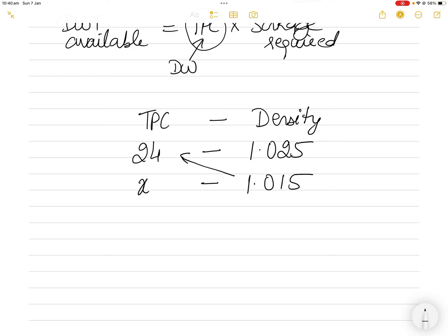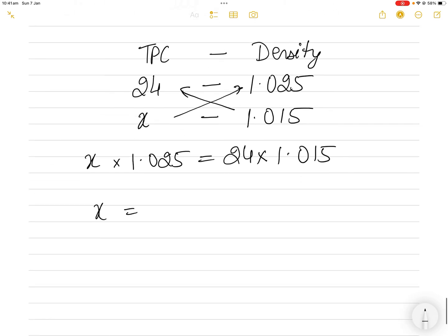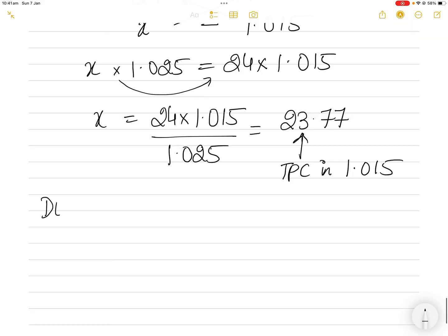Let's call the TPC at 1.015 as x. Cross multiply: x × 1.025 = 24 × 1.015, so x = (24 × 1.015) / 1.025, which gives a TPC of 23.77 in dock water at density 1.015.